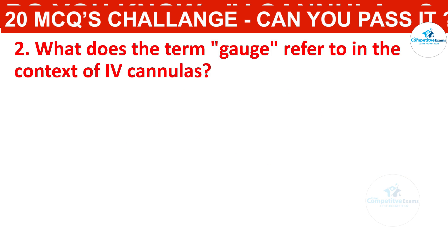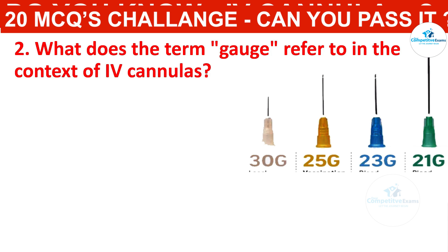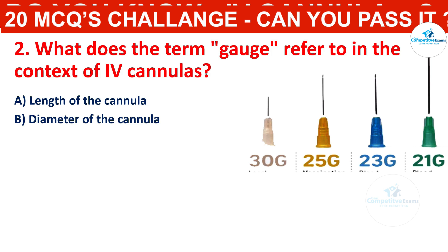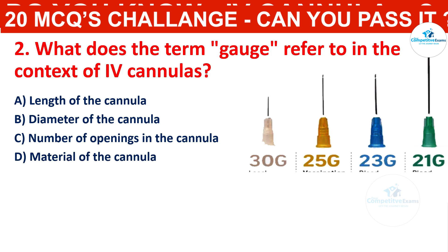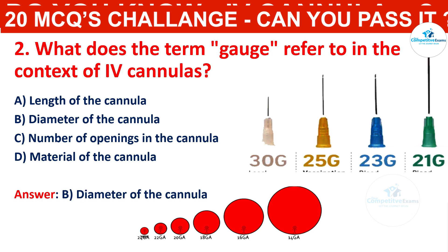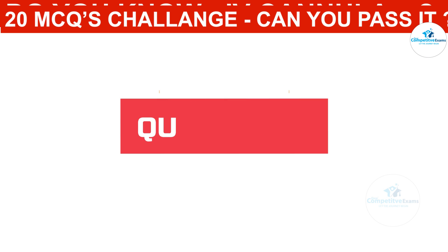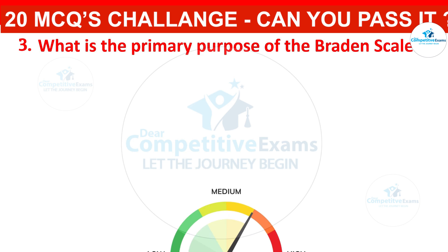Question 2: What does the term gauge refer to in the context of IV cannulas? Your options are: length of the cannula, diameter of the cannula, number of openings in the cannula, or material of the cannula. The correct answer is diameter of the cannula. The gauge of an IV cannula indicates the diameter of the needle; a lower gauge number corresponds to a larger diameter.